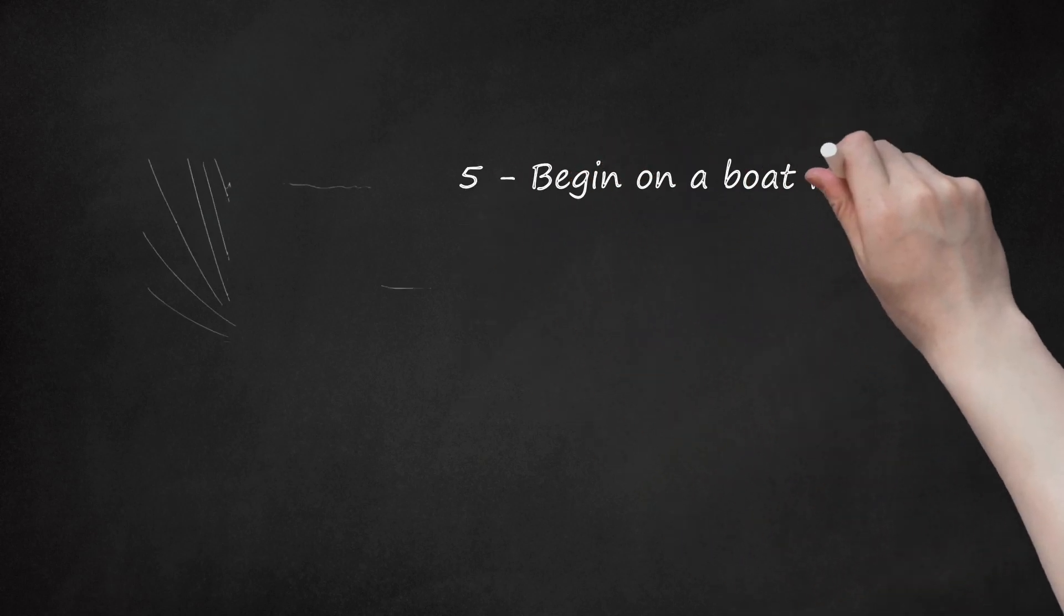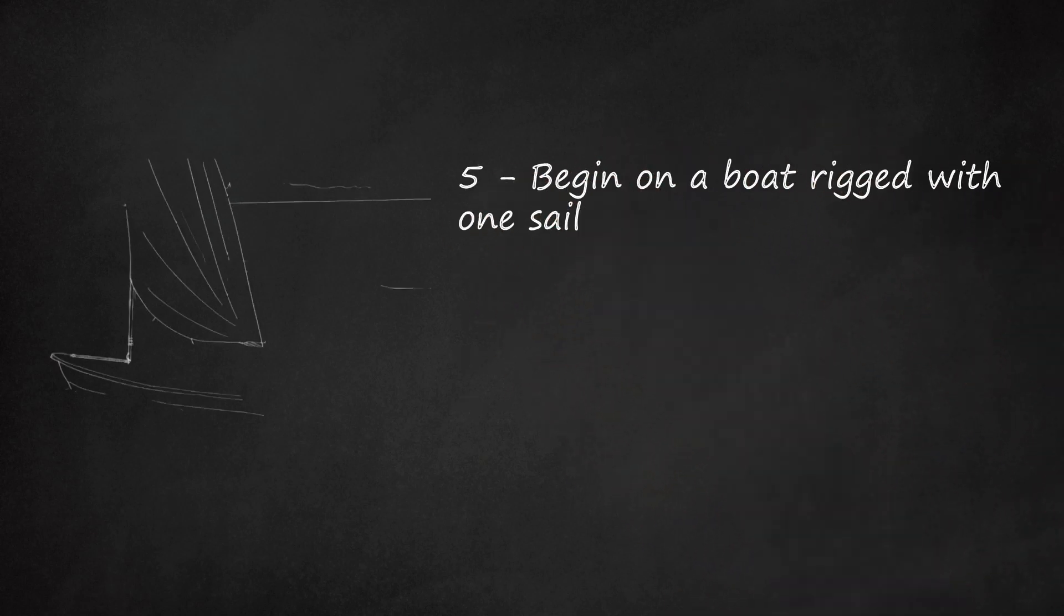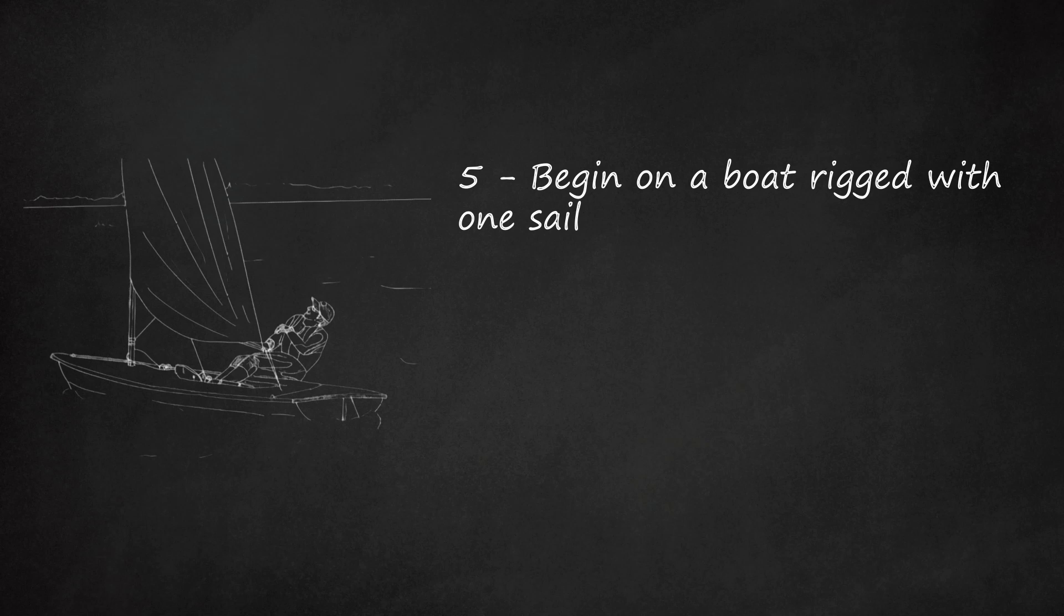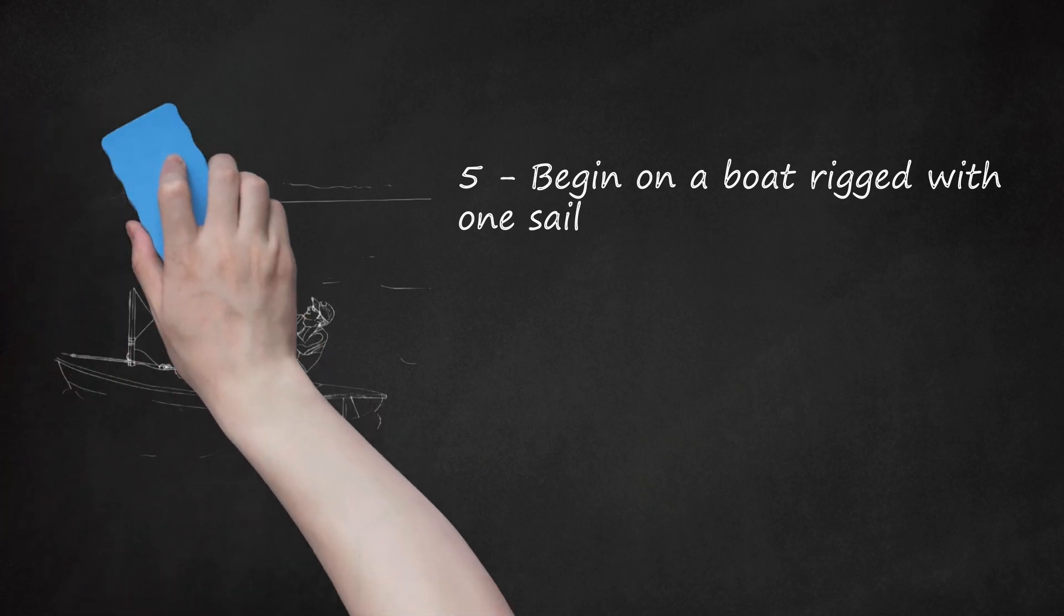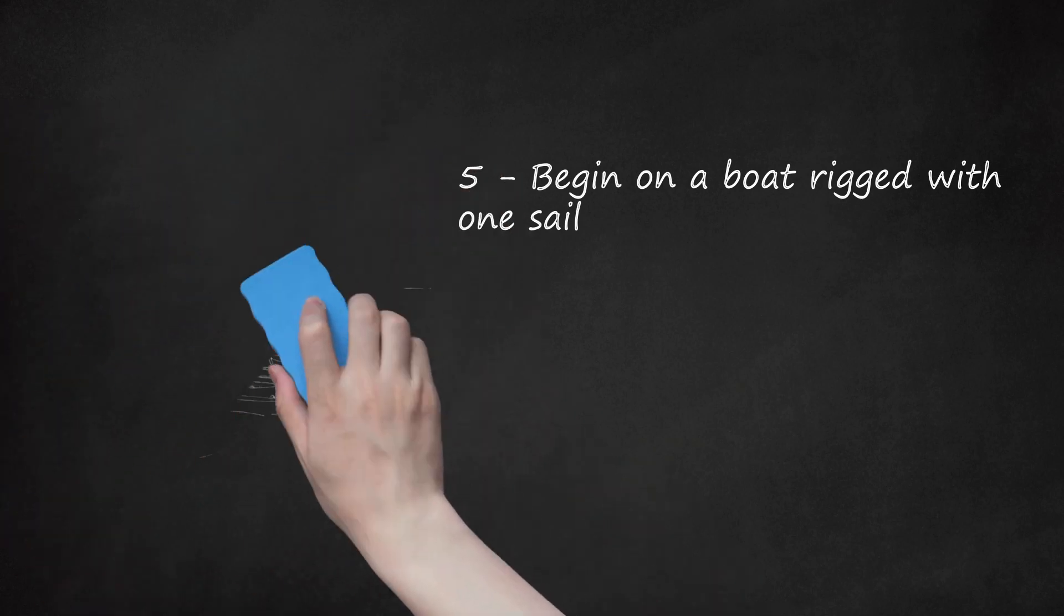Begin on a Boat Rigged with One Sail. Choose a boat with a single sail or perhaps just a mainsail and a jib, the small sail located in front of the mainsail. Starting on a boat that's rigged with only one sail will make learning sailing basics easier and less complicated.